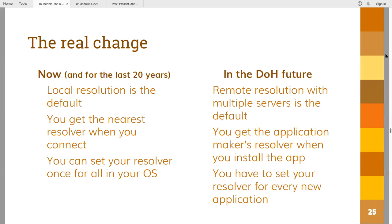But in the future — at least if Mozilla's model wins out, though Google has a somewhat different model — if Mozilla insists and other browser makers follow, the default becomes: anyone downloads the browser, installs it, and gets a default resolver chosen by the browser maker, which is a remote resolver. And same for other applications, not just browsers. Even if you want to change that, now you have to change your resolver in each and every application, making it much harder for users to control where their DNS queries are going.